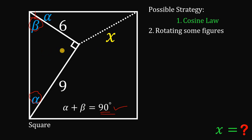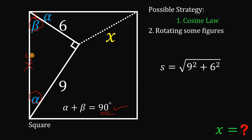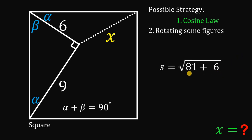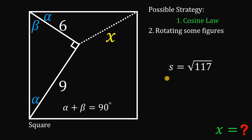To use the cosine law, we need the side length of the square. We'll use the Pythagorean theorem on the right triangle to solve for S, the side length of the square. So S equals the square root of 9 squared plus 6 squared. Now, 9 squared is 81 and 6 squared is 36. Adding them gives 117, so S equals the square root of 117.